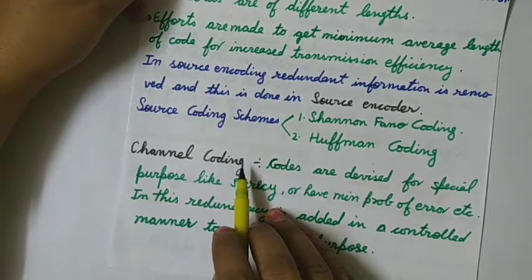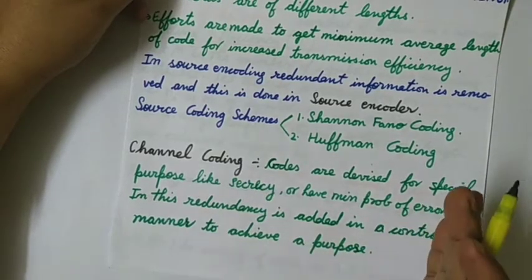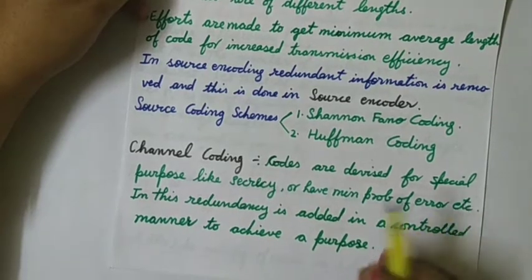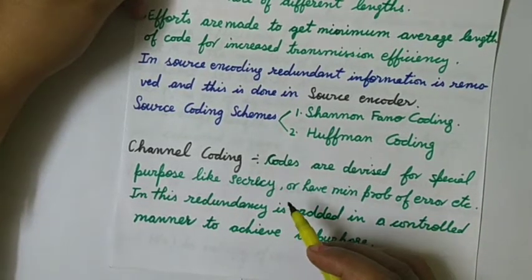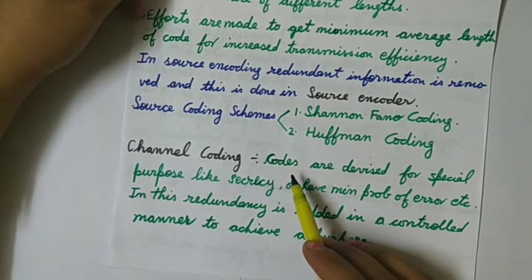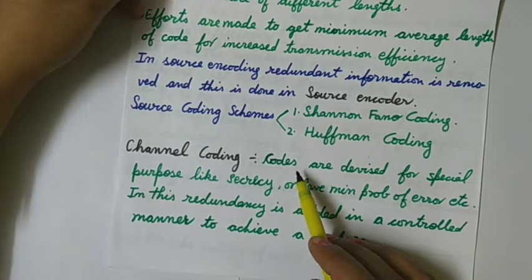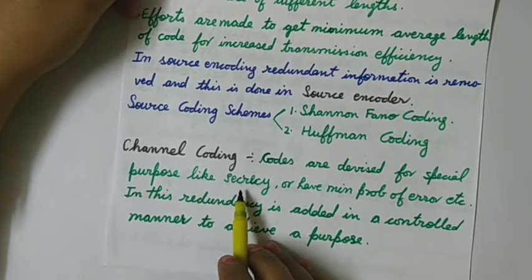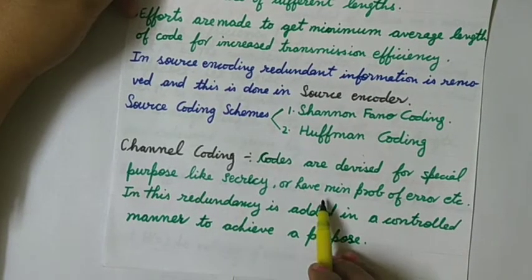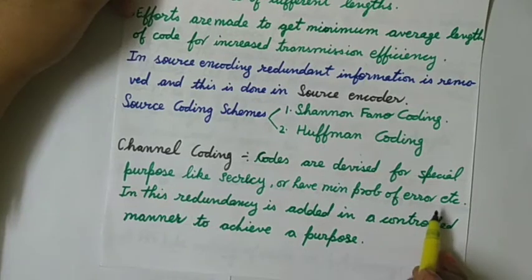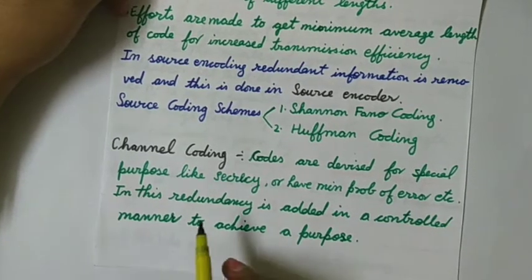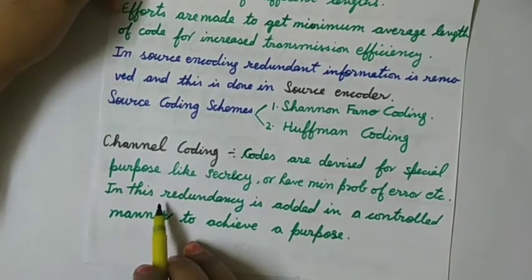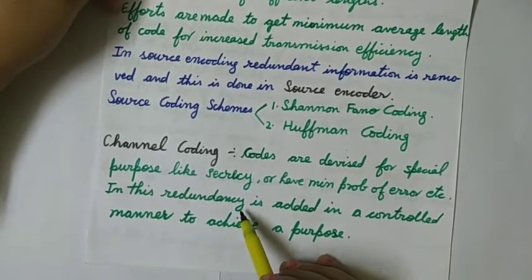Other than source coding, there is also channel coding. In source coding, the redundant information is removed, while in channel coding, a controlled form of redundancy is added. This is used to prepare codes for special purposes like providing security or having a minimum probability of error, depending upon the application.